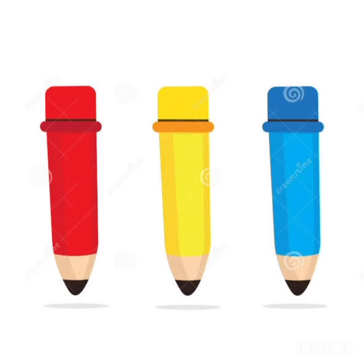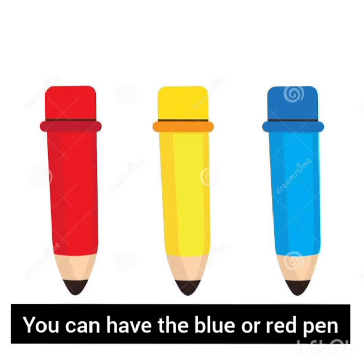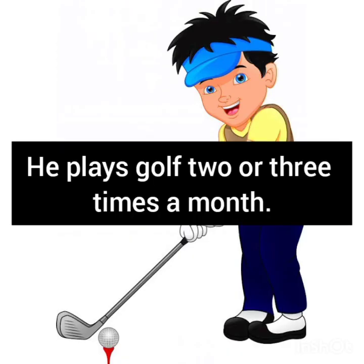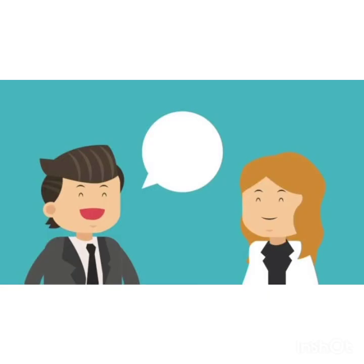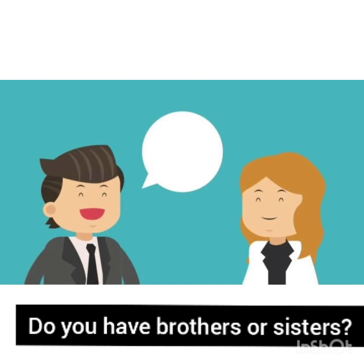For example, baga: You can have the blue pen or red pen. Tula — tu blue pen manje nila pen, kiva red pen? Ya doghyan madhun konta hi gheu shakto. Second baga: He plays golf two or three times a month. Don kiva teen veda, tya mahinyatun golf khelthu. Do you have any brothers or sisters? Tula kon te bahin kiva bhau aahe ka?